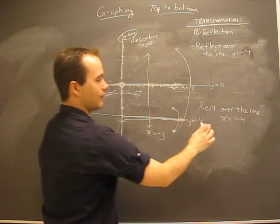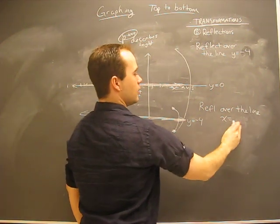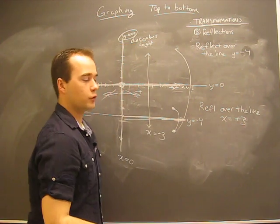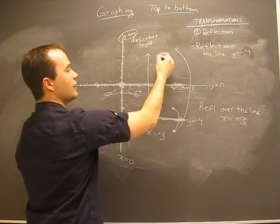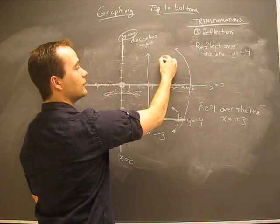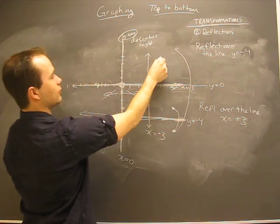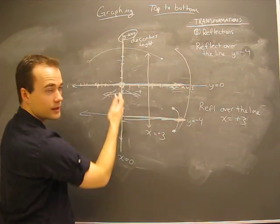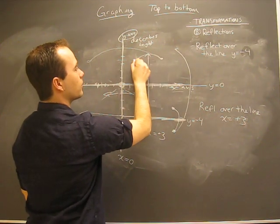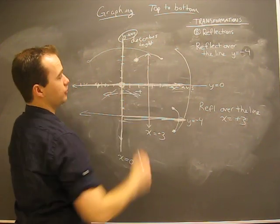Likewise, if we were asked to reflect a point over the line x equals three, and our point was right here, instead of going all the way over here like we would with the y-axis, this is our new mirror point, so that's where our new point would be.